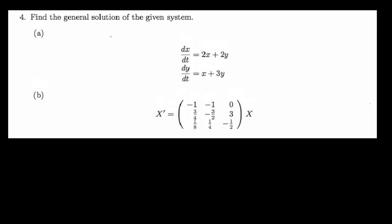Hi there. So this brings us to question 4, which is actually the last problem for this video. It says, find the general solution of the given system. Now we are given two systems. The first system is in normal form, that is the equation form, while the other system is in matrix form. So we are told to solve these two homogeneous linear systems.